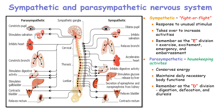The parasympathetic system maintains the daily necessary body functions. To remember its effects, you can use the mnemonic the 'D-division': digestion, defecation, and diuresis. The parasympathetic nervous system constricts the pupils, stimulates salivation to prepare for digestion, inhibits the heart rate to allow relaxation, constricts the bronchi, stimulates digestive activity in the stomach and intestines, stimulates the gallbladder to release bile juices, contracts the bladder allowing diuresis, and relaxes the rectum muscles to allow defecation.